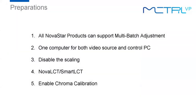Before doing multi-batch adjustment, we need some preparations. First, make sure your sending card and receiving card are from Novastar — no matter which model you use, they always support multi-batch adjustment. Second, use one PC for both the source and control PC, connecting it to the sending card with a USB cable and HDMI cable. Third, disable scanning — if you use any video processor or controller, make sure the scanning function is disabled so the whole screen displays pixel by pixel. Fourth, you need to install the software, as multi-batch adjustment is a software function.